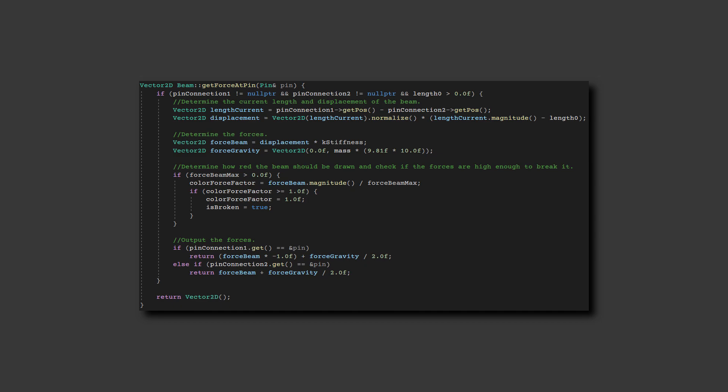The force in the beam is then used to set the color it will be drawn at. The closer the force is to the maximum allowable force, the more red it will be drawn, and the lower the force, the less red it will be drawn.